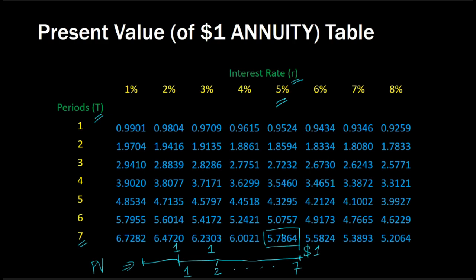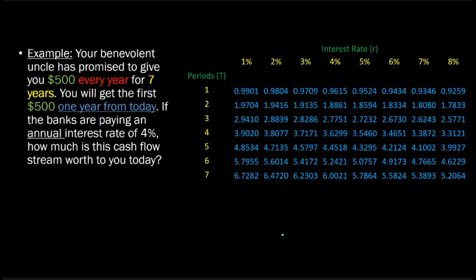Let's implement this. Let's use these tables to solve a problem we have seen before. Suppose you have a rich and benevolent uncle who promises you $500 every year for 7 years with the first $500 occurring one year from today.